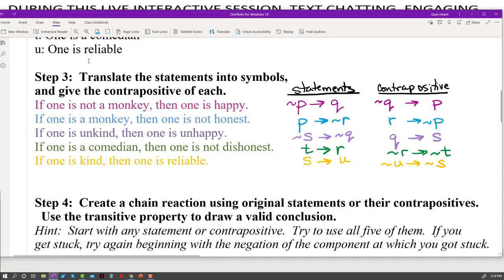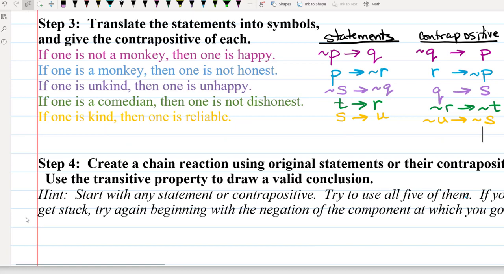So in step four, we're going to create a chain reaction using original statements or their contrapositives, and then we're going to use the transitive property to draw a valid conclusion. You can always start with any statement you want, and I'll prove that to you by doing this a couple different ways. And then you're going to follow it logically as far as you can, and then I'll show you what to do if you get stuck.